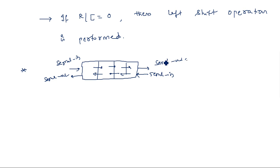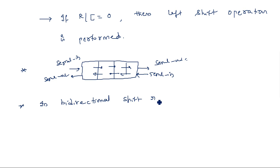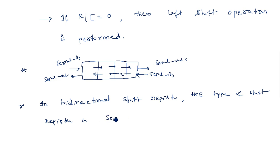In a bi-directional shift register, the data enters serially and leaves serially. Depending upon the type of shifting, the data may be shifted to the right or to the left. So the type of shift register used in a bi-directional shift register is serial in serial out.